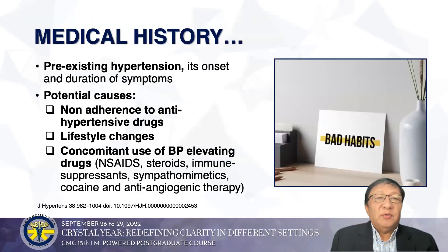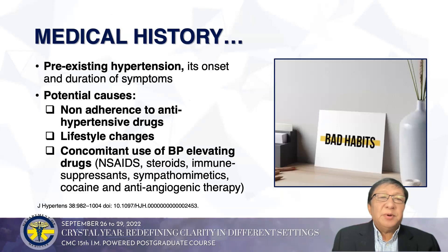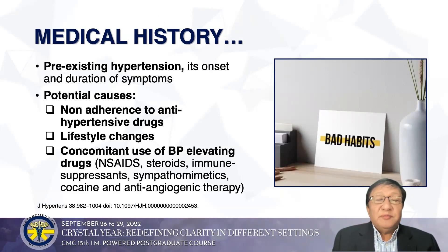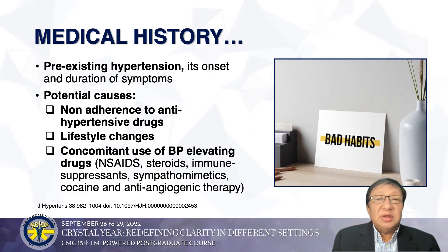We will still perform a quick medical history. These patients typically have pre-existing hypertension. We discuss onset and duration of symptoms and must identify potential causes. Common causes include non-adherence to antihypertensive drugs, lifestyle changes, and concomitant use of BP-elevating drugs like steroids, NSAIDs, sympathomimetics, and even cocaine, all of which can lead to hypertension.